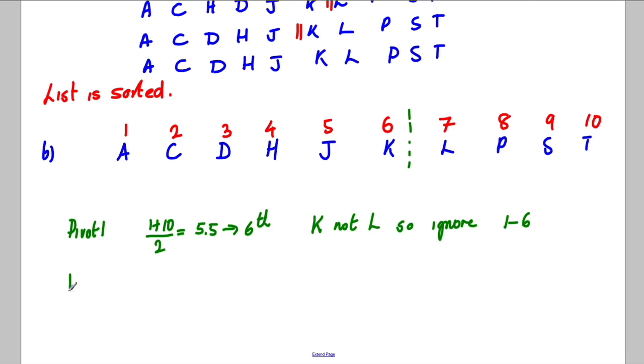I like to put a little line after it just to remind myself that I'm now dealing with these. Now we're going to do pivot two. We've got seven to ten left, so we're going to do seven add ten divided by two. Now seventeen divided by two is eight point five, which is telling us it's the ninth one. Now the ninth one is S, not L, which is what we're after. So we're going to ignore S and everything after it, so nine and ten.